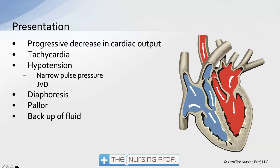On presentation we're going to see a progressive decrease in cardiac output. Typically this is going to happen over a period of years; however, it could happen very rapidly if our patient has a myocardial infarction. With a big MI, a big area of the myocardium is no longer functioning well, and the patient can easily go into developing heart failure. In most cases it is a progressive decompensation in cardiac function.